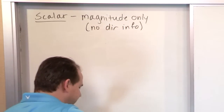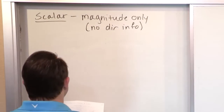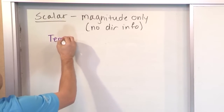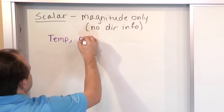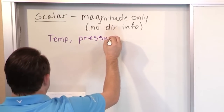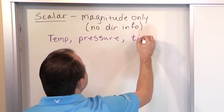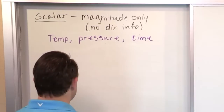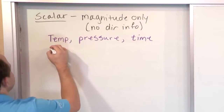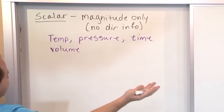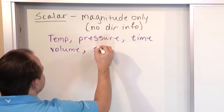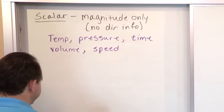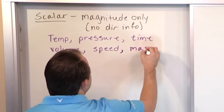Once I start giving you some examples of scalars, you'll understand why that makes total sense. Examples of scalars would be something like temperature, pressure like air pressure, time, volume of a gas like 34 cubic meters, speed — it tells you how fast you're going in meters per second but doesn't give any direction information — and mass, the mass of an object.